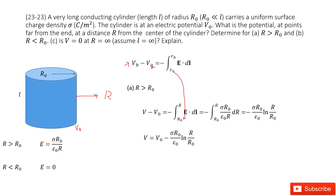We integrate from r₀ to r, with E pointing outward and dl in the same direction, replacing dl with dr. Evaluating the integral gives us a logarithmic function. At r = r₀ the extra term goes to zero, so substituting back we get the final expression for V when r > r₀.